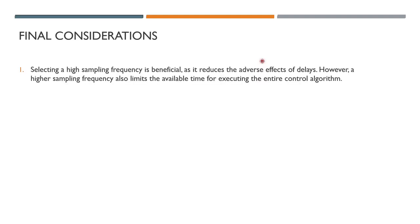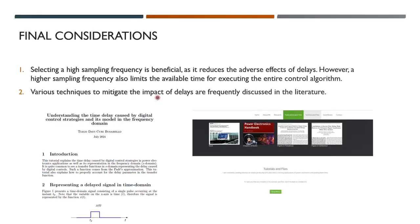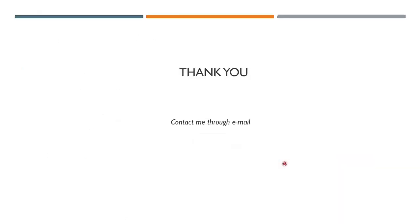For final considerations: selecting a high sampling frequency is beneficial because it reduces the adverse effect of delays. However, a higher sampling frequency also limits the available time for executing the entire control algorithm and requires more complex and expensive microcontrollers, so there is always a trade-off between sampling frequency, cost, and computation time. In the literature there are several techniques to mitigate the impact of delay, like multi-sampling strategies. The material from this video is available as a PDF on my webpage. Thank you for watching.